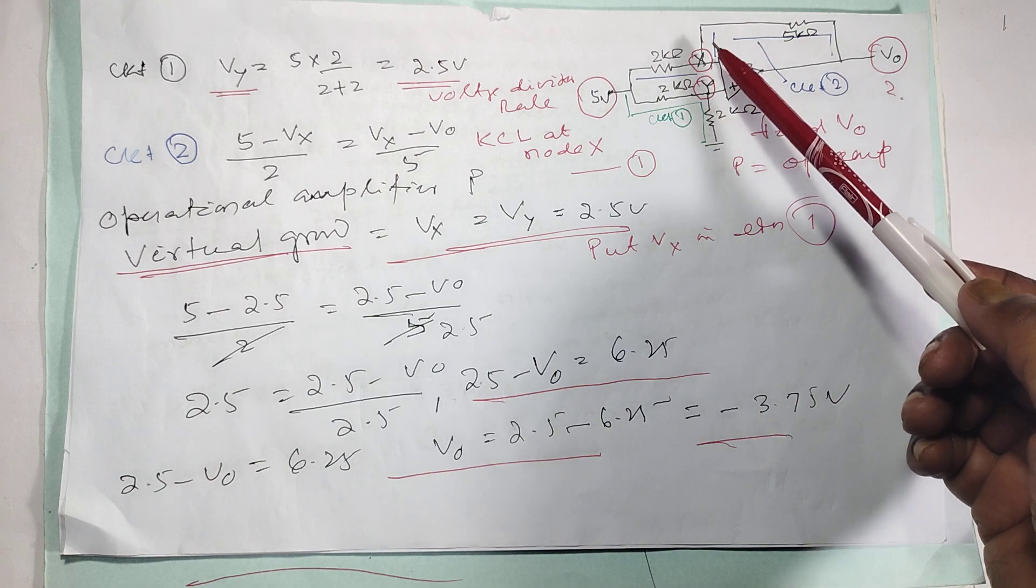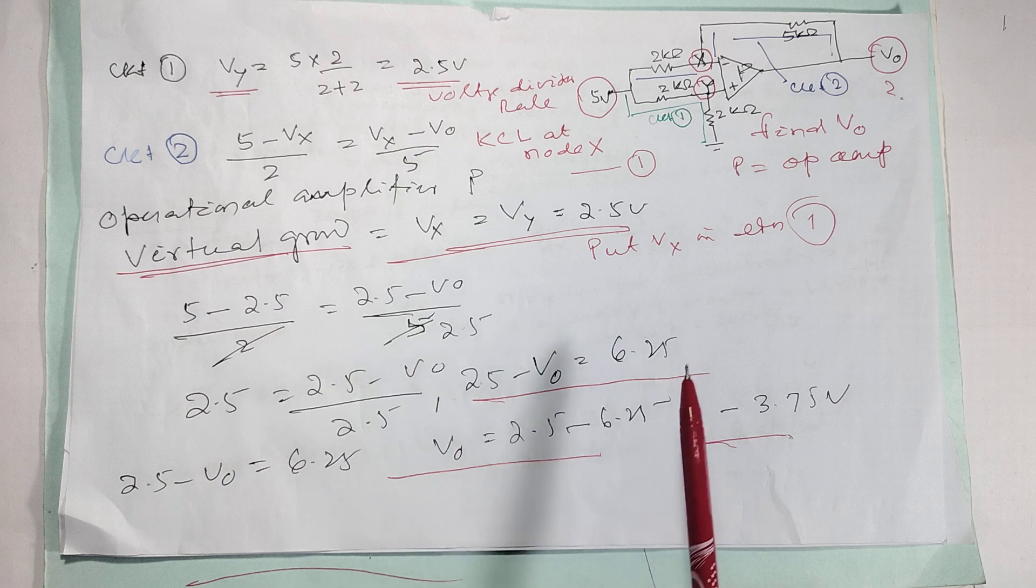As per the virtual ground, VI is equal to VX. If you put VX, your output will come minus 3.75 volt.